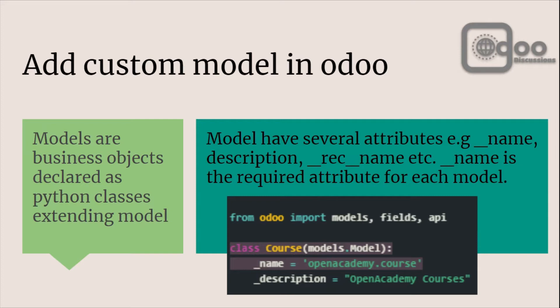What is a model? Models are business objects declared as Python classes. Inside Odoo, ORM is actually the key component. Inside the ORM they have defined some classes and also some built-in methods which we can use to interact with the database without writing queries.